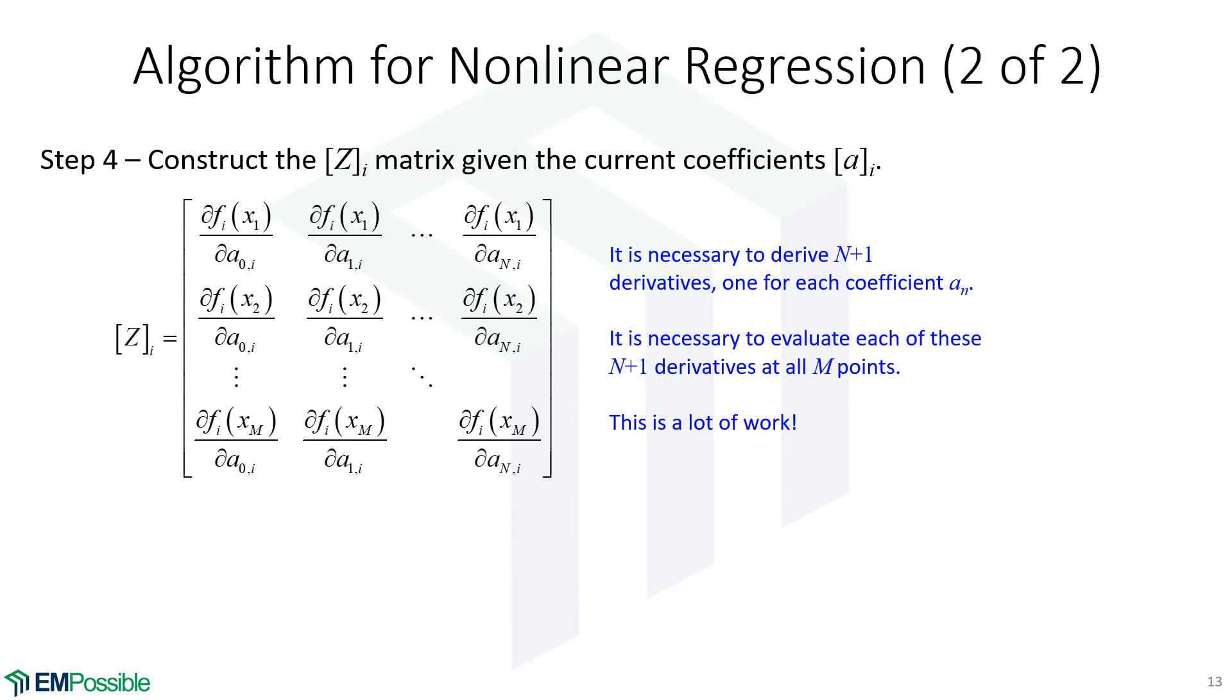At this point, we need to construct this big matrix, Z. And so we will evaluate these partial derivatives at all of our measured values. We will populate the Z matrix. And when we step through the example, this will make more sense. But this is a lot of work. It's a lot of work on paper up front. And it's the most work in the code. But we populate this big Z matrix.